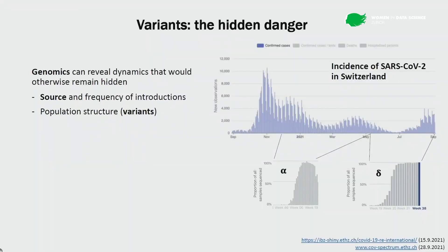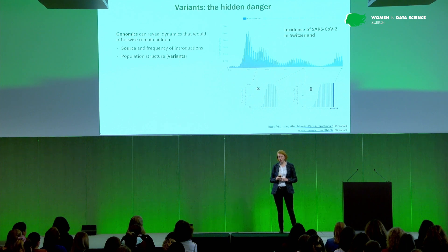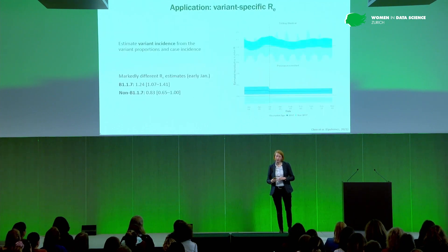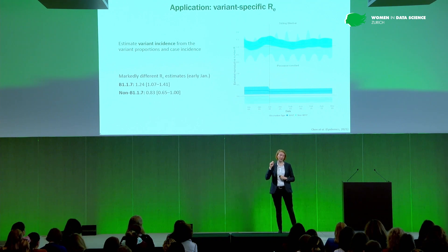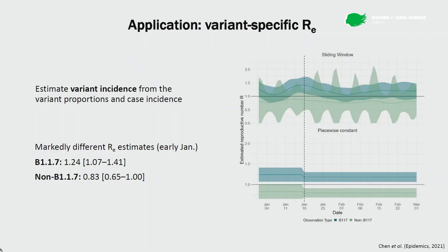Over the last year, a lot of transmission dynamics have been governed by different variants — ones that are more transmissible than previous ones or that can evade immunity. Keeping track of which variants are circulating and which are increasing in frequency is really essential to inform public health policymakers. We've used this information to estimate variant-specific effective reproductive numbers: if you have the proportion of infections corresponding to a particular variant and the total number of infections on a given day, you can get variant-specific incidence estimates and apply this pipeline to get variant-specific R_E values.